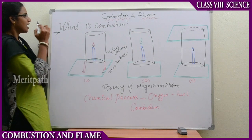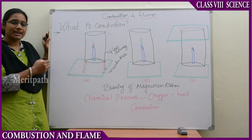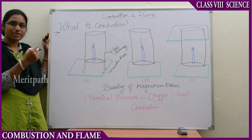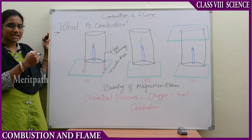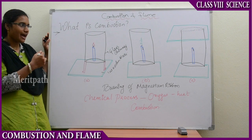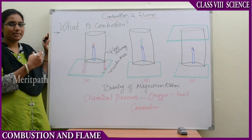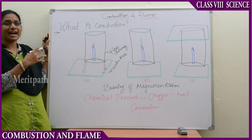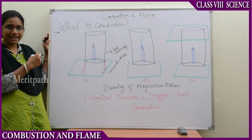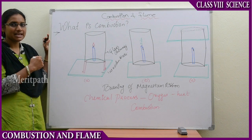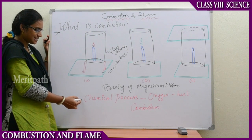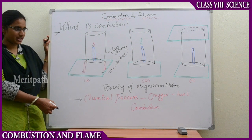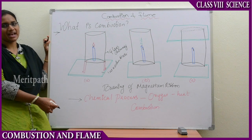Let us see what is combustion first. Recall in your 6th or 7th class, you studied the burning of magnesium ribbon. We did that experiment practically and observed that the magnesium ribbon was burnt out in the presence of oxygen when given light heat. So combustion is the chemical process in which there is a reaction with oxygen present in the atmosphere that generates heat.